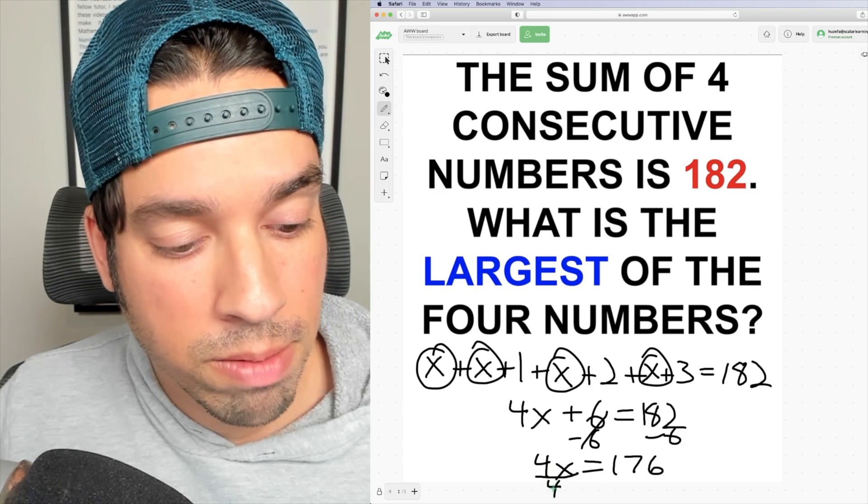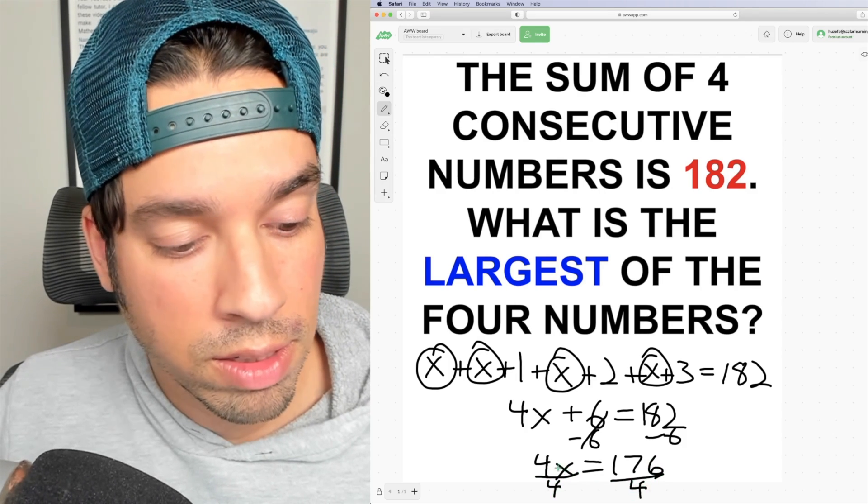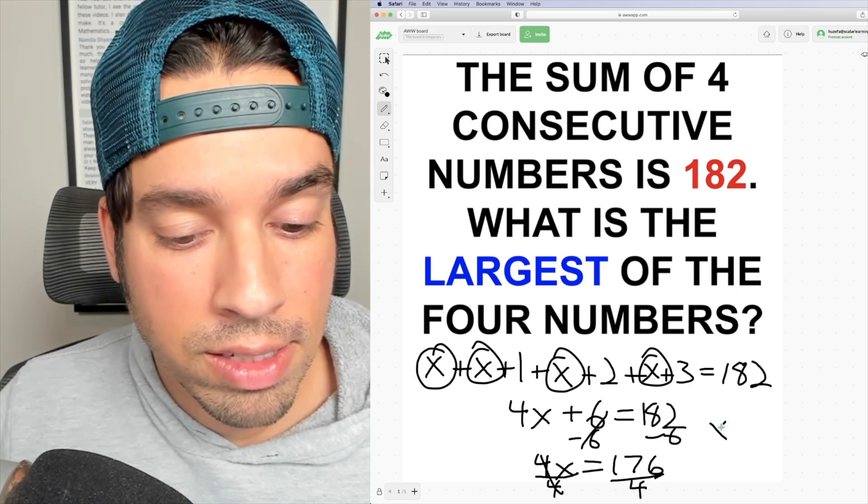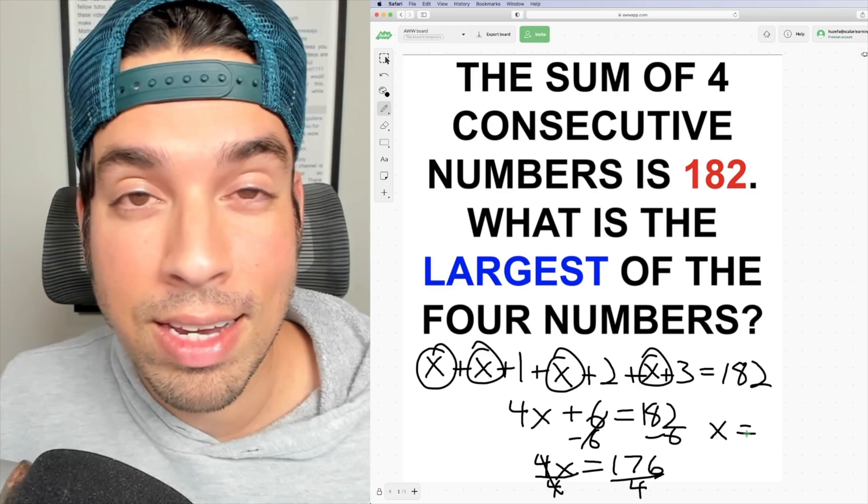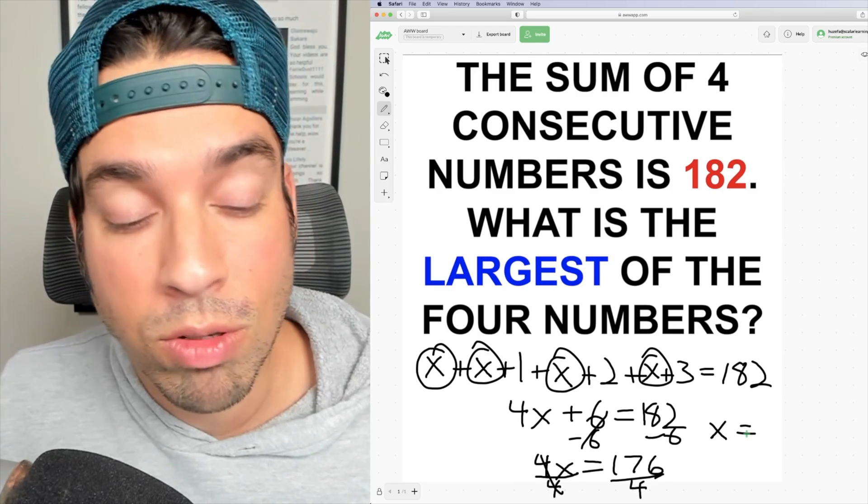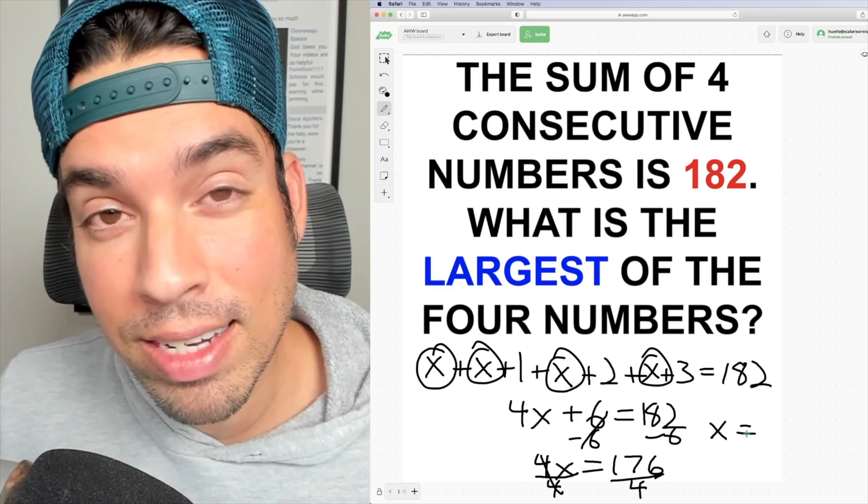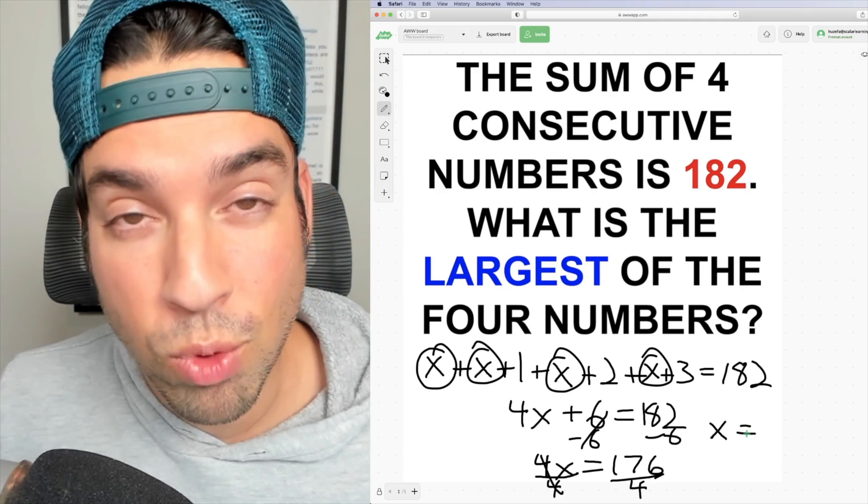Last but not least, let's divide everything by 4 on both sides. Cancel, and X equals—by the way, a nice way that I like to divide by 4 is I like to take half and then half again. That's a nice little mental math trick. So half of 176 is going to be 88, and half of that is going to be 44.